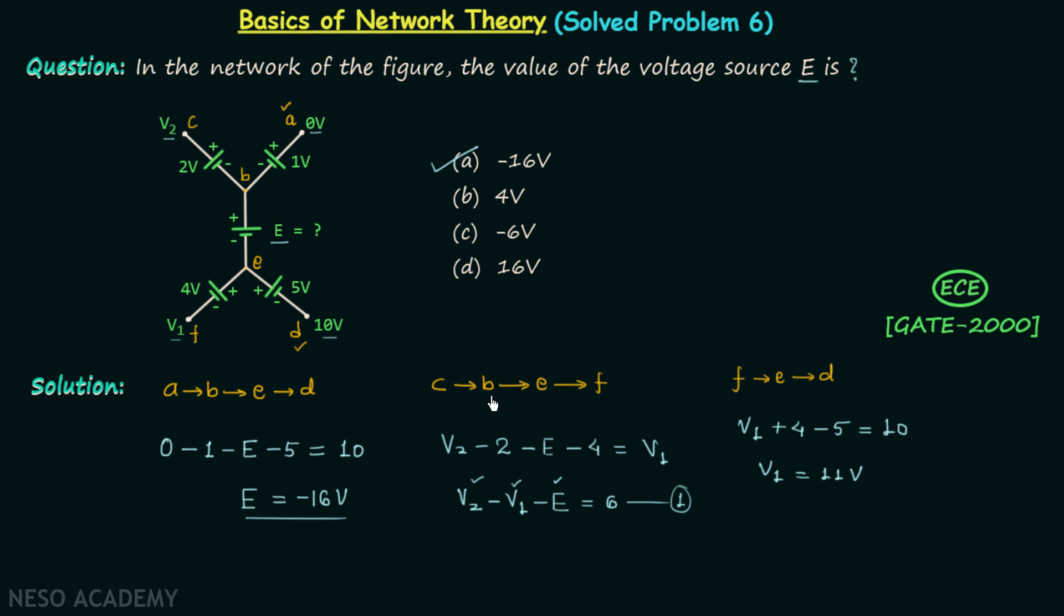And now we will focus on calculation of V2. To calculate V2, we will follow the path CBA. So we are applying the KVL from C to B and then to A.